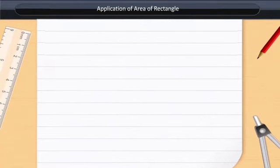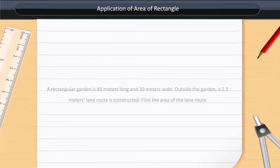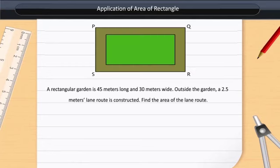Application of Area of Rectangle: A rectangular garden is 45 meters long and 30 meters wide. Outside the garden, a 2.5 meter lane route is constructed.